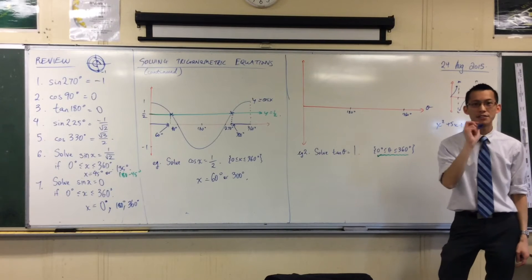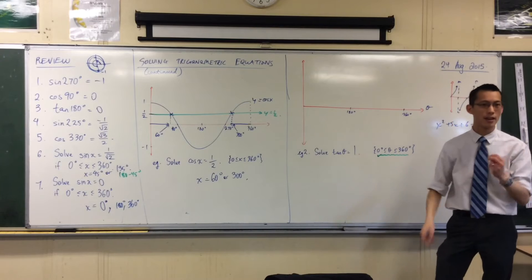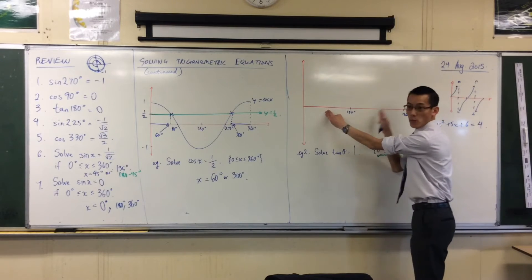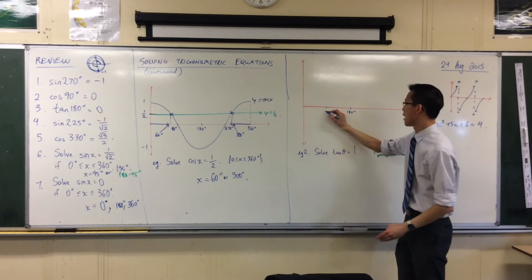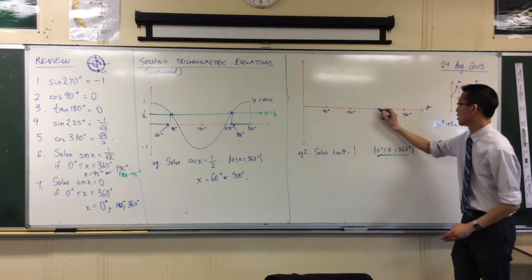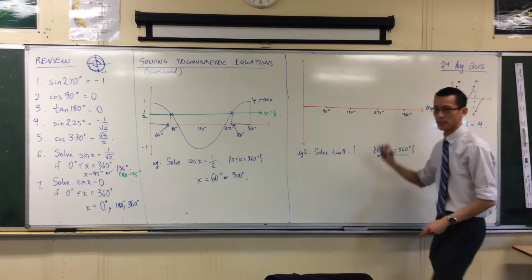Once I have that half, I need to do this halving, this bisecting thing two more times. One here and one here, that'll give me 90 and 270. So you quickly bisect, that'll give you 90, bisect, that'll give you 270.